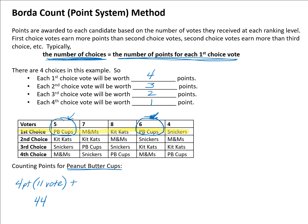That gives 44 points for first choice votes. Typically I'd wait to calculate until everything is written out, but we start with four points for every first choice vote. Moving to second choice votes — worth three points each — there are no Peanut Butter Cups in the second choice column, so they receive zero points for second choice.